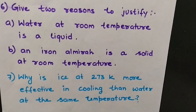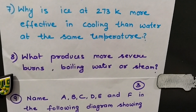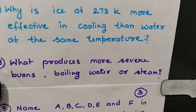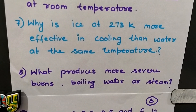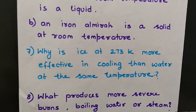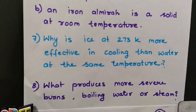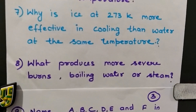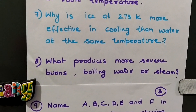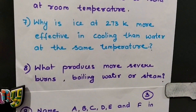The next part: an iron almirah is a solid at room temperature. An iron almirah has a fixed shape and a fixed volume; its shape and size do not change. It is hard and rigid and cannot flow. Keeping these properties in mind, choose any two reasons and write them to justify that an iron almirah is solid at room temperature.